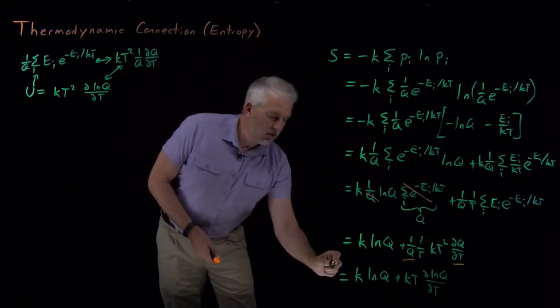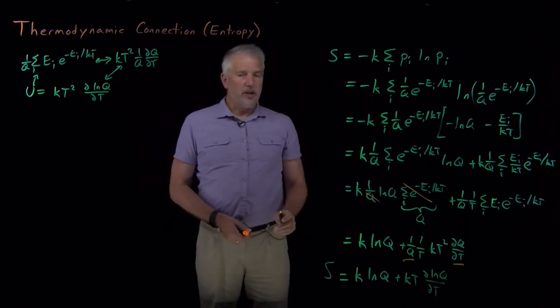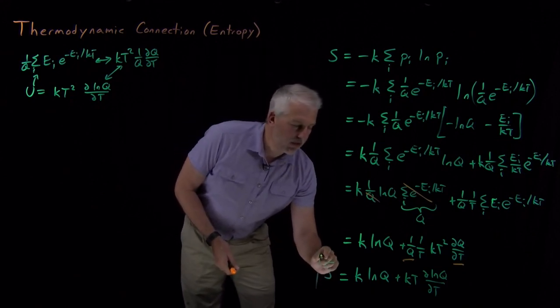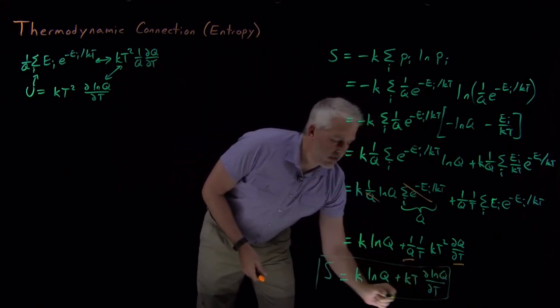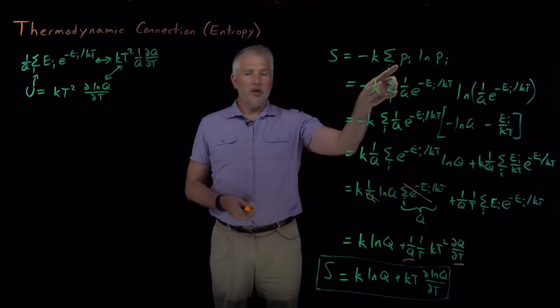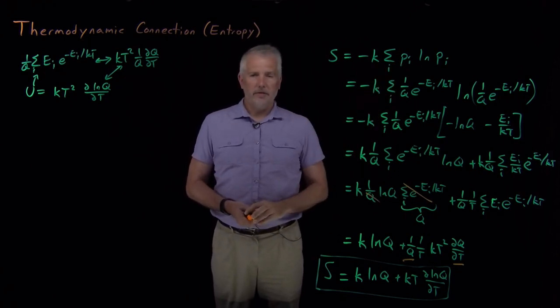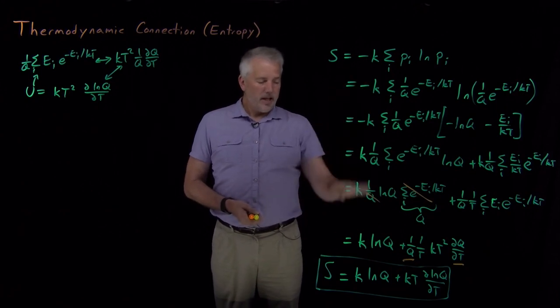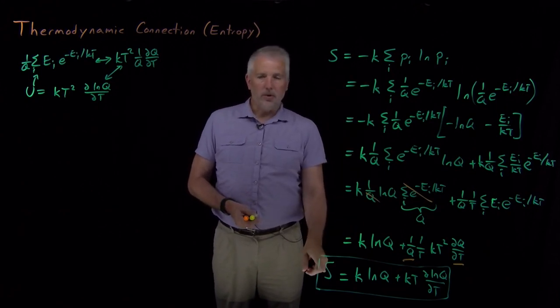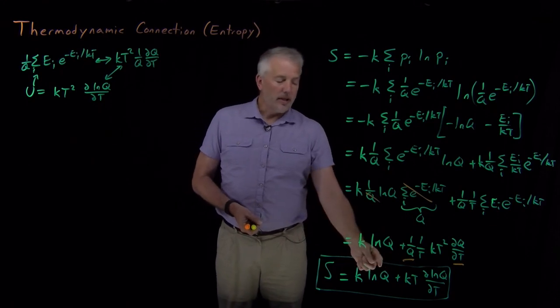So that's all the result that I've gotten for calculating what the entropy is. And now I've converted my microscopic definition of the entropy, entropy in terms of knowing what each of the probabilities are for each of the individual states that I'm interested in.